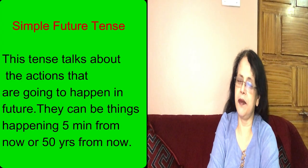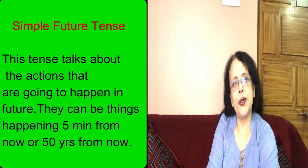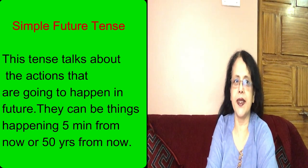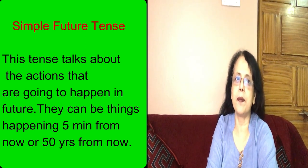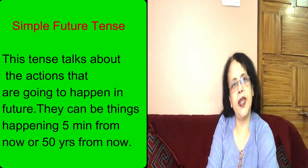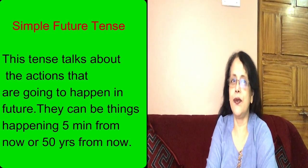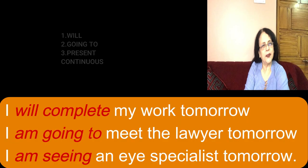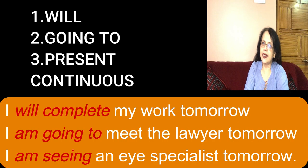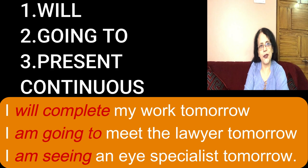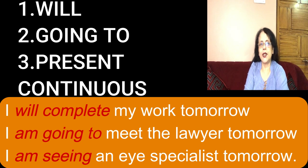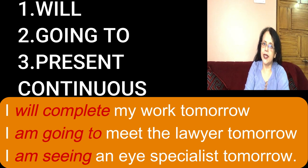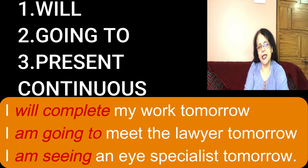As is clear from the name, this tense is used to talk about all the actions that are going to happen in future. They can be things happening five minutes from now or 50 years from now. There are three ways in which you can talk about future: first, by using will; second, by using going to; and third, by using present continuous.